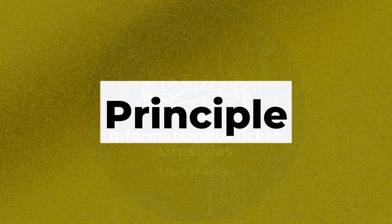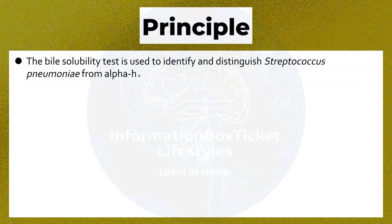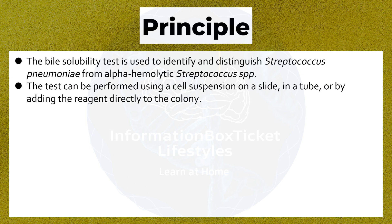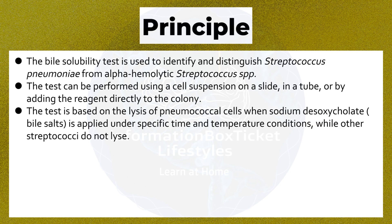Principle of the Bile Solubility Test: The test is used to identify and distinguish Streptococcus pneumoniae from alpha-hemolytic streptococci. It can be performed using a cell suspension on a slide, in a tube, or by adding the reagent directly to the colony. The test is based on the lysis of pneumococcal cells when sodium desoxycholate, also known as bile salts, is applied under specific time and temperature conditions, while other streptococci do not lyse.